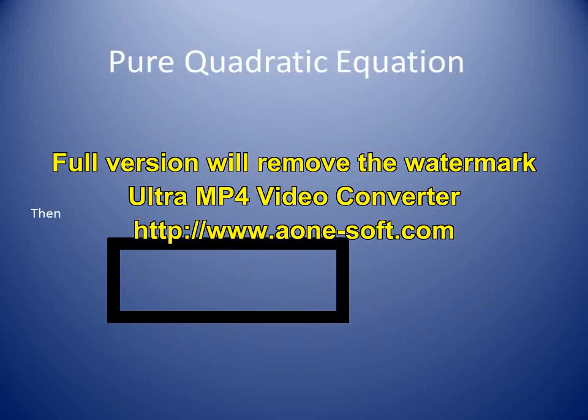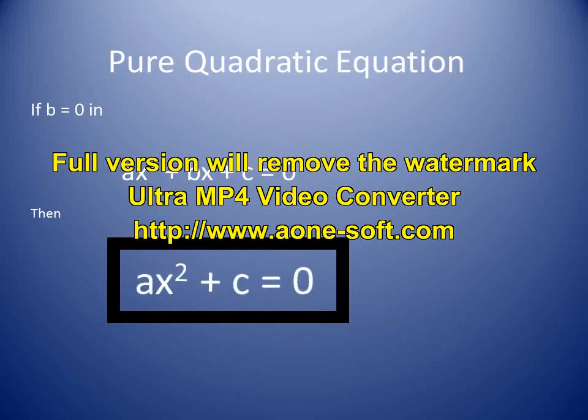Similarly, if we put the value b = 0 in the quadratic equation ax² + bx + c = 0, we get the pure quadratic equation: ax² + c = 0. In this equation, only two terms are involved — the term with the highest power and the constant term. No other term is involved in the pure quadratic equation.